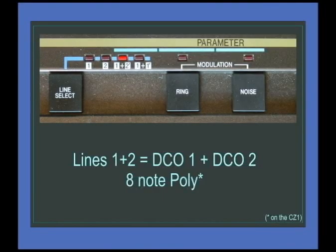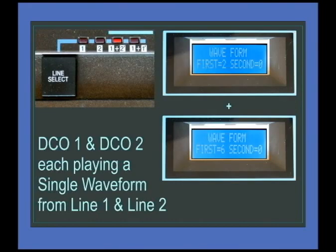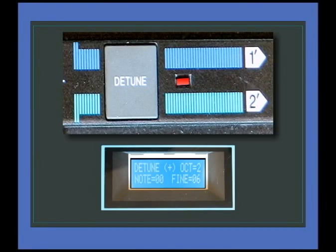We're now mixing lines one and two together, so DCO1 and DCO2. We're down to eight-note poly on the CZ1, so we're starting to get a slightly more complex patch. DCO1 is playing a square wave and DCO2 is playing a resonant saw. With the detune setting we're shifting the octave and fine tuning.